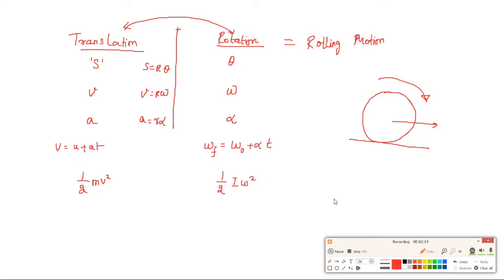For translation motion, linear momentum p = mass × velocity. For rotation, angular momentum L = I·omega. These are the key momentum relations from our previous part.